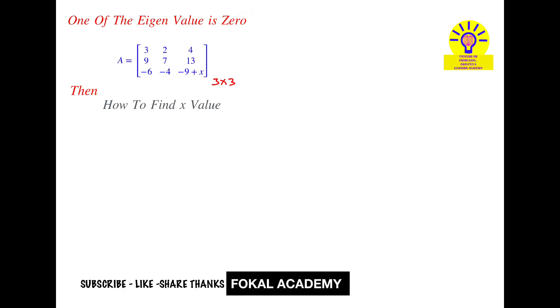So first of all observe here this is a 3 by 3 matrix, that means it has three eigenvalues possible. So let's assume that one is lambda 1, another is lambda 2, and another is given as 0. The third eigenvalue is given as 0. Now how can we find x value here?